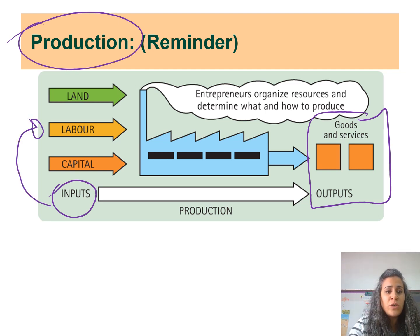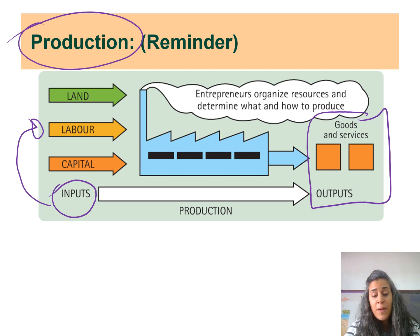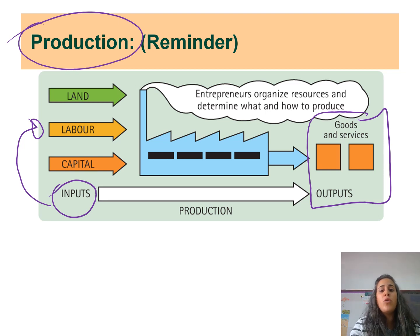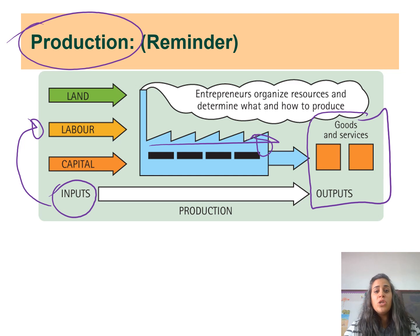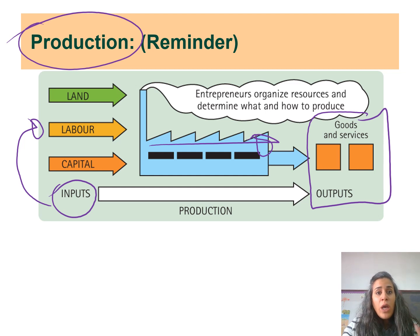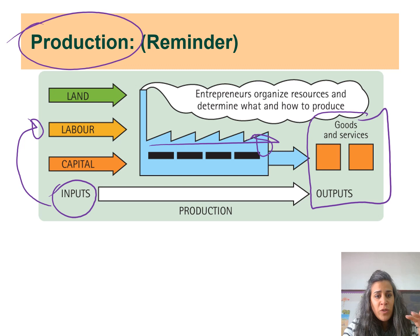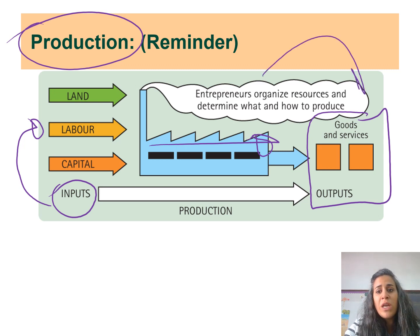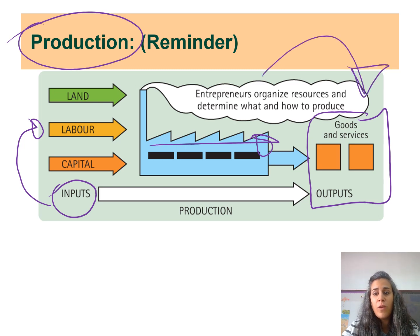In order to reach that final product, I need inputs or resources. My inputs or resources are land, labor, and capital. When I join them together, they pass through a process of production organized by the entrepreneur, who is the one that arranges these inputs to achieve the end result — the output.